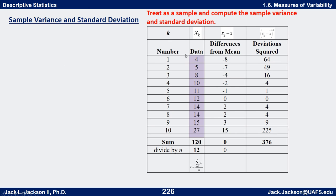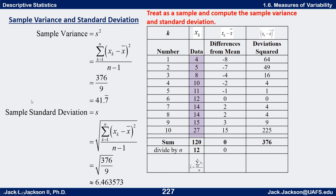Now treating our dataset as a sample, we compute the sample variance and standard deviation. The deviations and their squares are the same as before, summing to 376. This time we divide by n minus 1, which is 9, giving 376 divided by 9 equals approximately 41.7 repeating. That is the sample variance s squared. Taking the square root of that gives the sample standard deviation s.